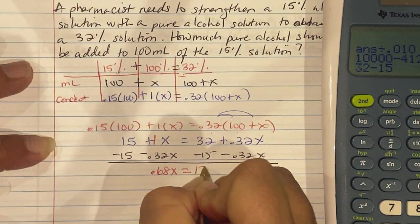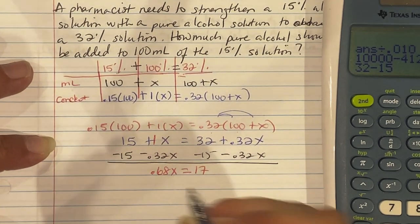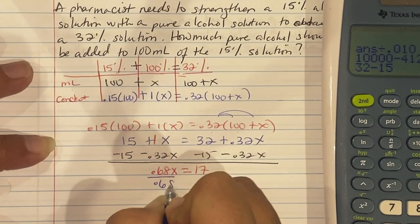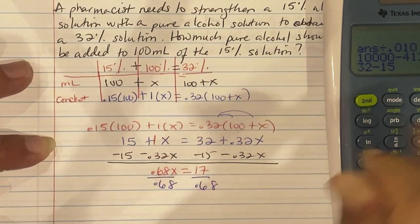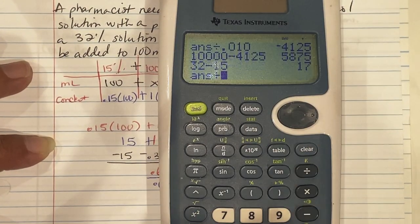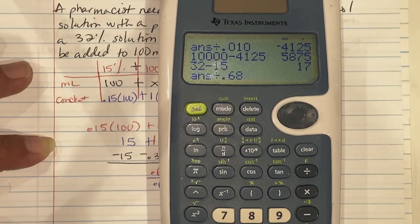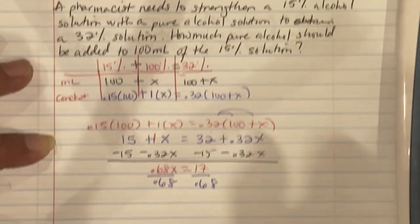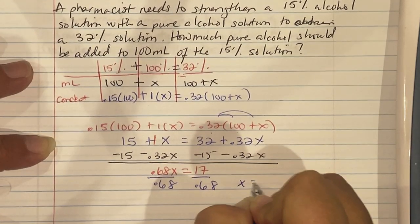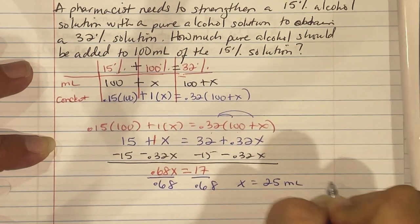And then what's left is to divide both sides by 0.68. So we get 25. So I need 25 mL of the 100%.